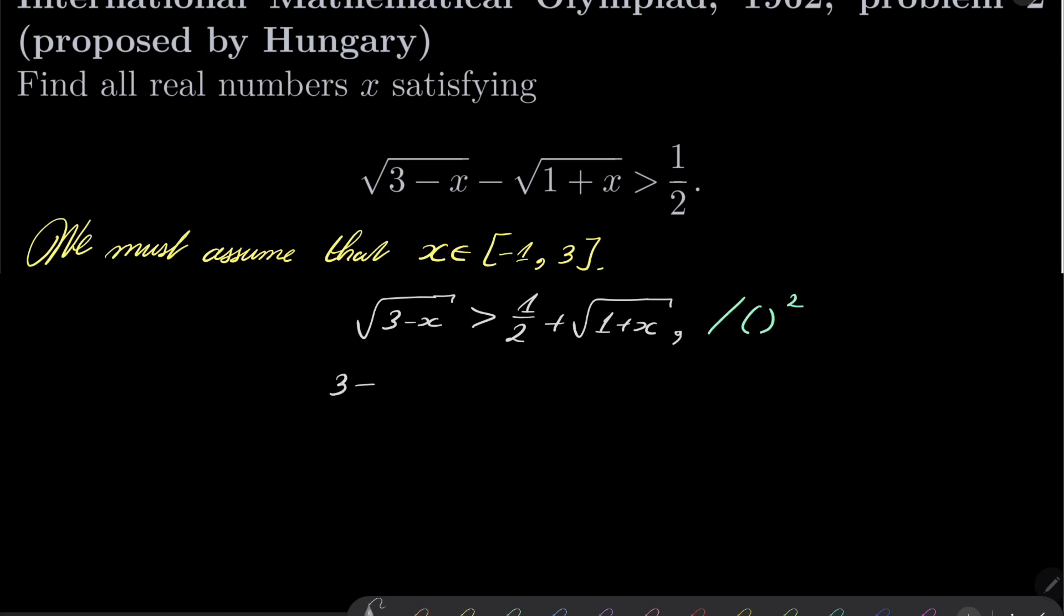and we have 3 minus x greater than 1 fourth plus 1 plus x plus square root of 1 plus x.